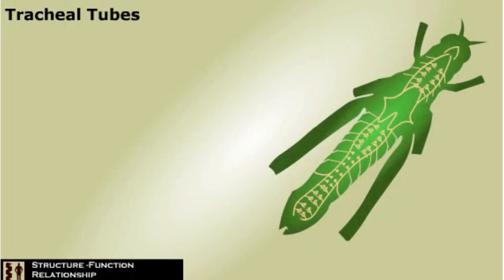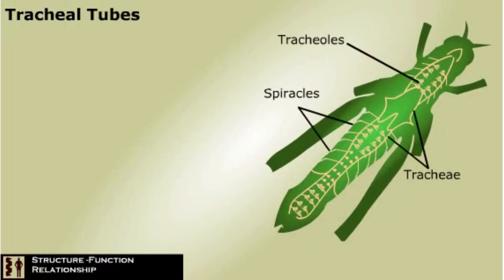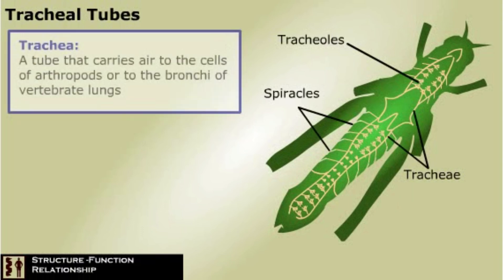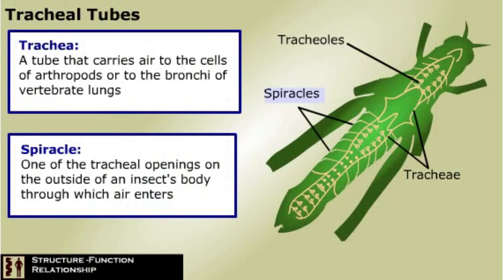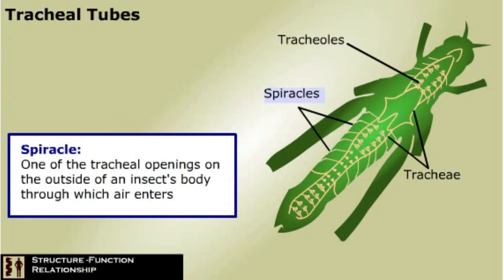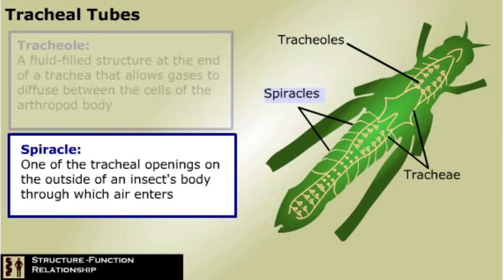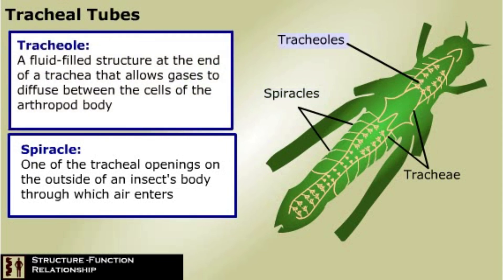Insects and other arthropods, such as spiders and centipedes, don't have a network of blood vessels involved in gas exchange. Instead, they have a system of tubes called tracheae that perform a similar function. Tracheae branch inward from openings on the body surface called spiracles, through which air enters. Tracheae are ingrowths of the body wall, and they end in structures called tracheoles. Tracheoles are filled with fluid, and the exchange of oxygen and carbon dioxide takes place by diffusion between the tracheoles and adjacent body cells.